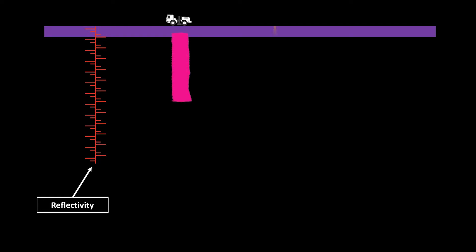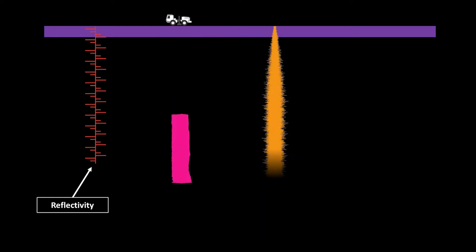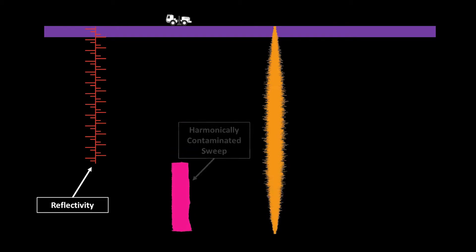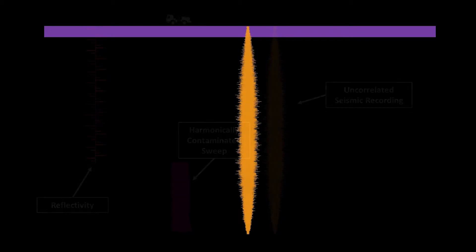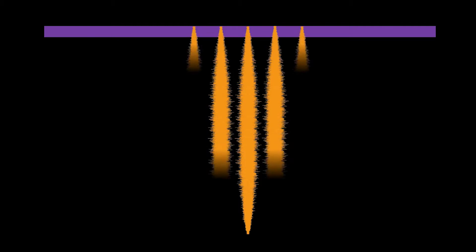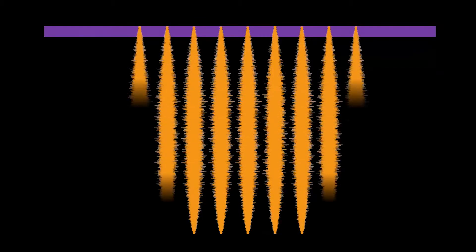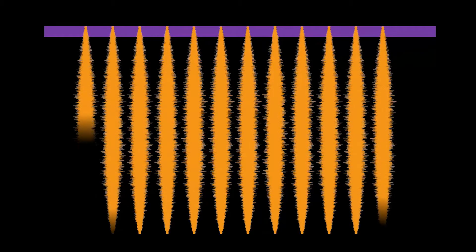Here's a very basic explanation of the correlation process. We start off with a basic reflectivity, which represents layering within the Earth. We use a vibrator to impart a signal of known length and frequency range into the ground. The wave is partly reflected at reflecting interfaces in the Earth, with reflections being received at surface receivers, giving us an uncorrelated seismic recording. With all the geophones recording, we end with a very confusing shot record full of uncorrelated traces.